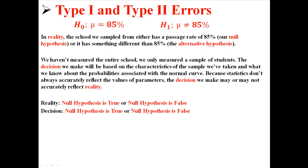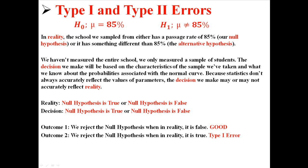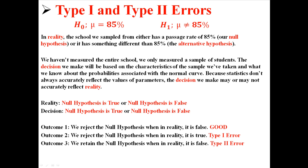In reality, the null hypothesis is either true or false, and we're going to make a decision about whether it is true or false — so we could be right or we could be wrong. There are four possible outcomes. Outcome one: we reject the null hypothesis when, in reality, it is false — that means we rejected it when we were supposed to, which is good. Outcome two: we reject the null hypothesis when, in reality, it is true — we're saying it's false when it actually was true. That means we made a mistake, and that mistake is called a type 1 error. Outcome three: we retain the null hypothesis when, in reality, it is false — that's also a mistake, and that mistake is called a type 2 error.